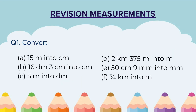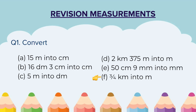Question 1: Convert — A) 15 meters into centimeters, B) 16 decimeters 3 centimeters into centimeters, C) 5 meters into decimeters, D) 2 kilometers 375 meters into meters, E) 50 centimeters 9 millimeters into millimeters, F) 3/4 of a kilometer into meters. Now pause the video here.